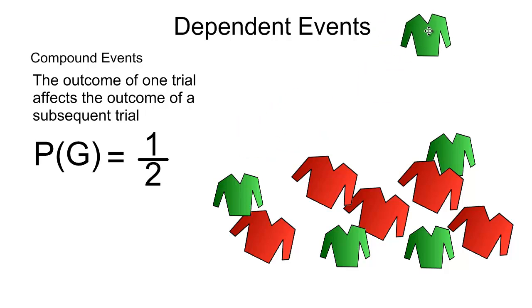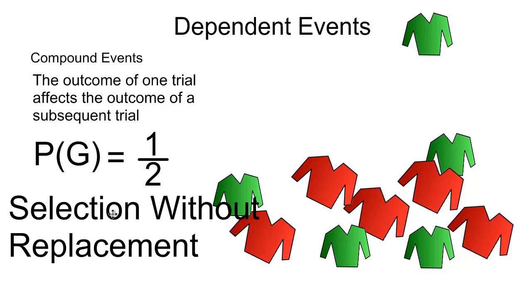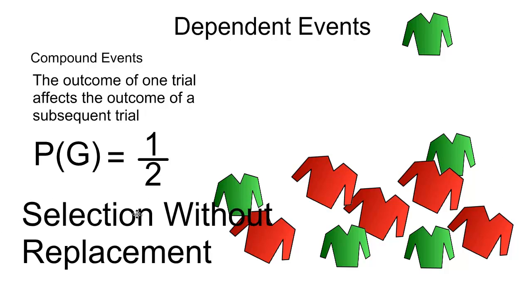So there we go. I've got my green sweater. I'm all happy. These are dependent events. And so if we have these selection issues going on, this ends up being selection without replacement.